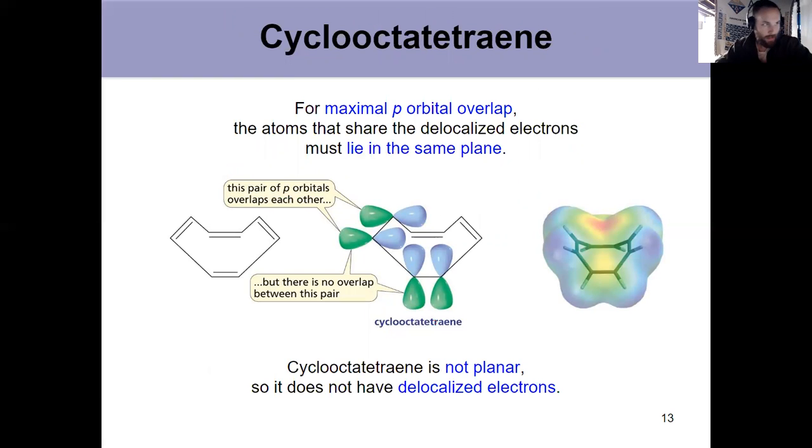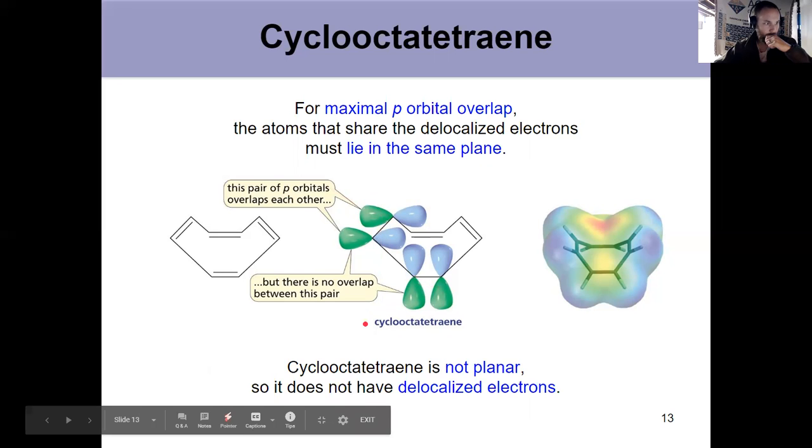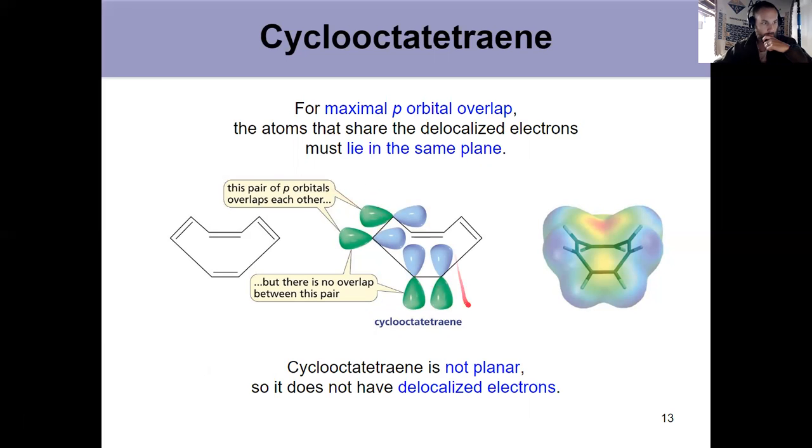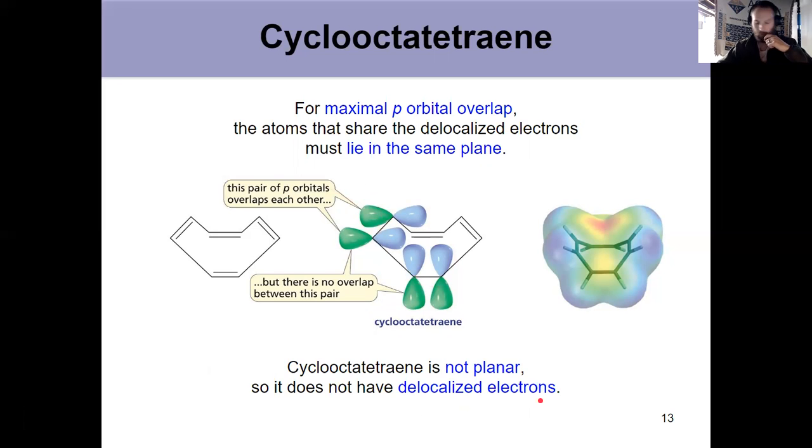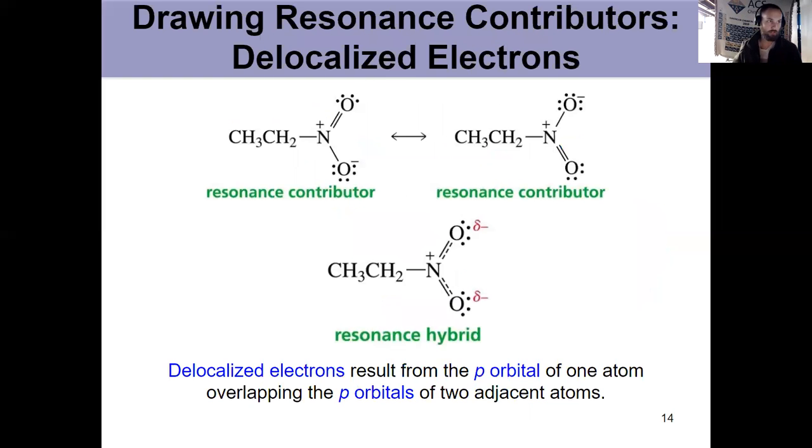What about cyclooctatetraene? So this adds two more carbons. Cycloocta means we have C8 and it adds two more pi electrons. Here for cyclooctatetraene, it's not planar. Because for maximum p orbital overlap, we want these things to lie in the same plane. Because it's not planar, they're not getting maximum overlap, so it doesn't have delocalized electrons. And we'll talk more about that at the end of the chapter with something known as Huckel's rule. How do we identify something that has that extra stability?